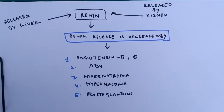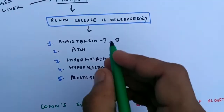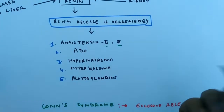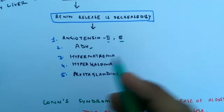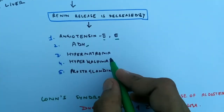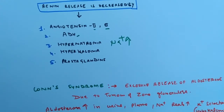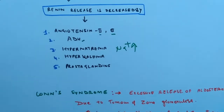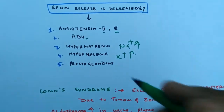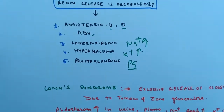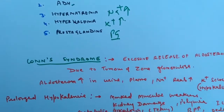Renin is created by the liver and the kidney. Renin release is decreased by the following factors: angiotensin 2 and 3 at appropriate levels send a negative feedback message; ADH level and excess excretion inhibit renin; hypernatremia — increased sodium — sends a negative feedback message; hyperkalemia — elevated potassium — also sends a negative feedback message; and prostaglandins and steroids also suppress renin release.